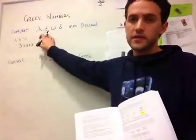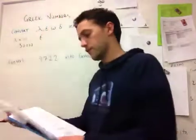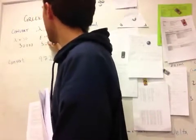The next symbol across is lambda and epsilon, and epsilon by itself, if we look at our chart, is equal to 5. So that must be 5,000.